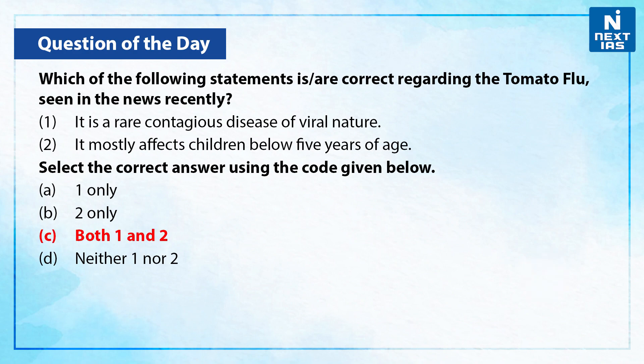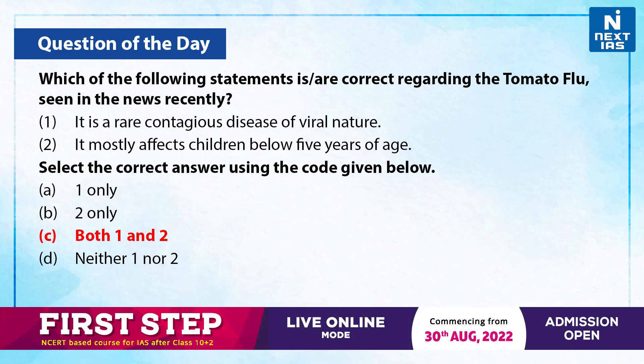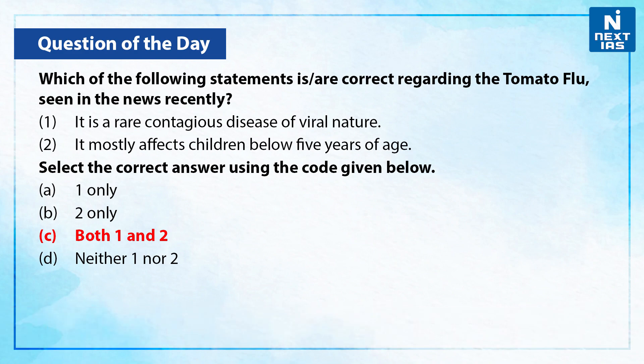As we know, both of the statements are correct — it is a rare contagious disease and it is of viral nature, and it mostly affects children below five years of age. Therefore, the correct answer is option C, that is both one and two. With this, we call it a wrap of today's edition of Topic of the Day. I hope you liked the video. I will see you with some other topic tomorrow. Till then, take care and do stay tuned.